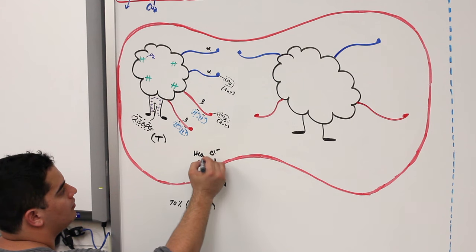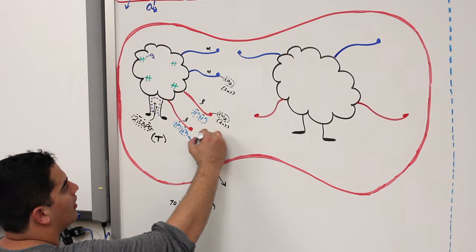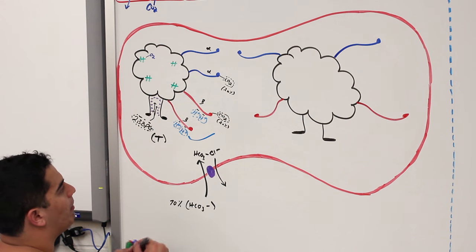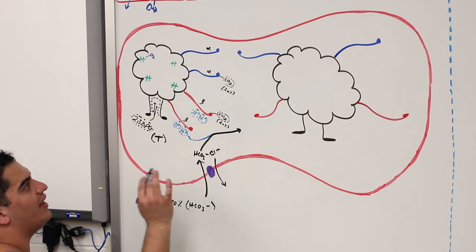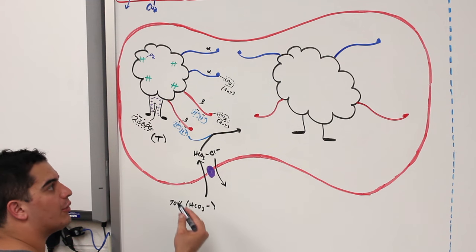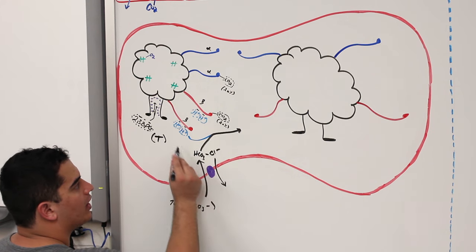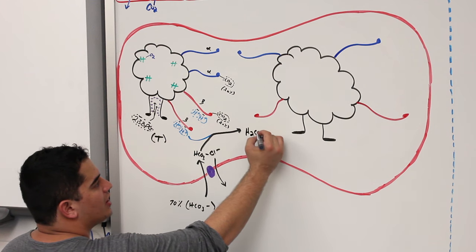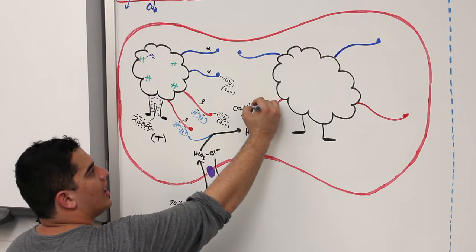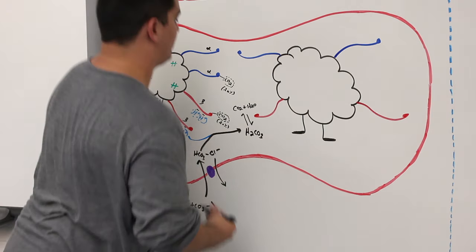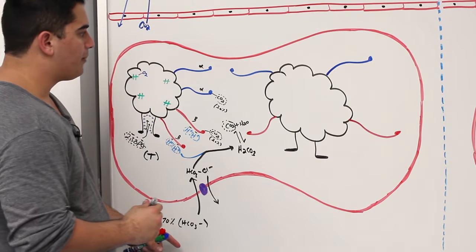The bicarbonate interacts with protons. In situations where hemoglobin's affinity for CO2, protons, and 2,3-BPG is decreasing, that bicarbonate brought in through the chloride shift combines with protons to form H2CO3. Then H2CO3 dissociates into CO2 and water in the presence of the enzyme carbonic anhydrase. That CO2 is what we had hidden in the form of bicarbonate.